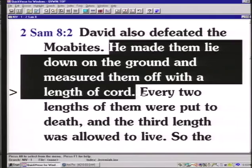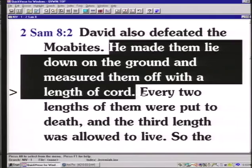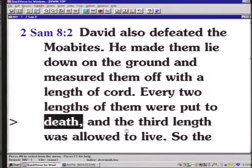So after he defeated them, he had them all line up and stand in order, like this. And he just stretched them out as far as they would go in single file. Then, the Bible says, every two lengths of them were put to death. And the third length was allowed to live. He took a rope, and he measured off two lengths. And everybody in the two lengths is put to death.